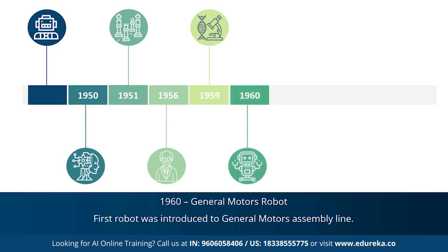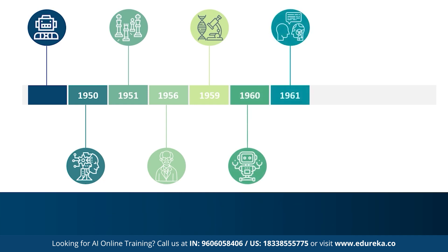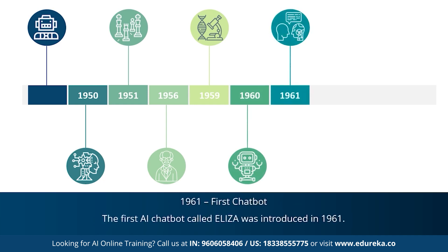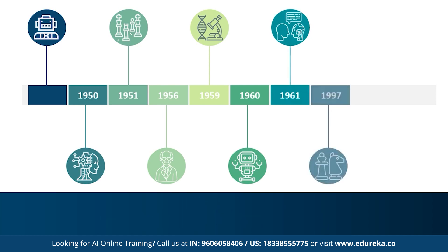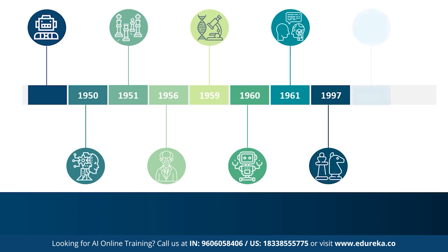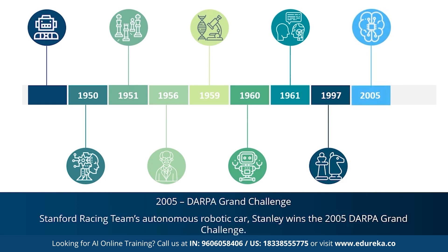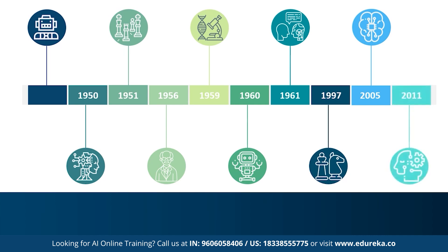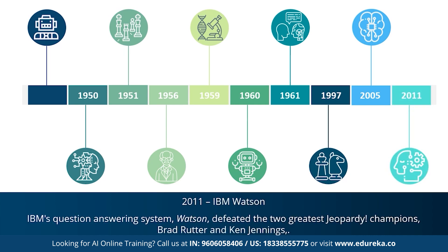In 1960, the first robot was introduced to the General Motors assembly line. In 1961, the first AI chatbot called Eliza was introduced. In 1997, IBM's Deep Blue beat world champion Gary Kasparov in chess. 2005 marked the year when an autonomous robotic car called Stanley won the DARPA Grand Challenge. In 2011, IBM's Watson defeated the two greatest Jeopardy champions Brad Rutter and Ken Jennings.